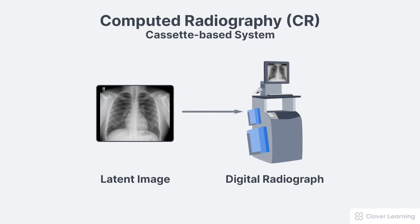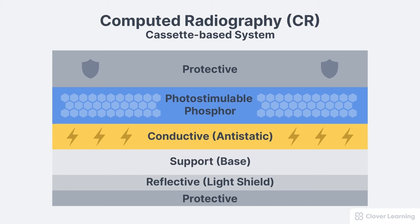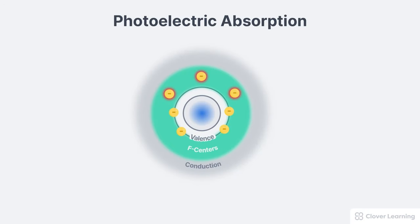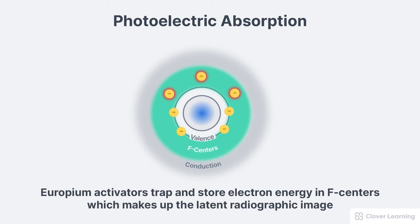In summary, computed radiography is an X-ray imaging system which utilizes cassettes to capture latent radiographic images and process those latent images into a digital radiograph. The cassettes are made up of several layers, along with an active phosphor layer where the latent image is produced. X-ray photons interact with the phosphor atoms through a process called photoelectric absorption and excite the electrons. The excess energy created in this process is stored within the imaging plate, creating the latent image.